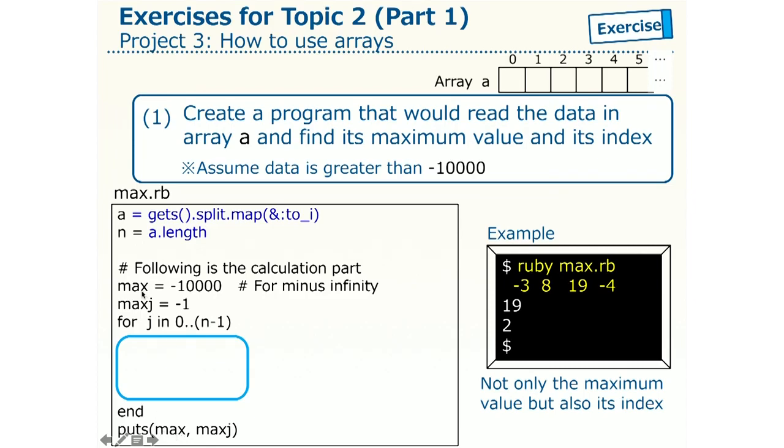The value max, this one, variable max, is used, kept this maximum value. Actually, we use this variable to keep the current maximum value when going through the array A. So, we assign minus 10,000 for its initial value here. The variable maxj is for keeping the index of the current maximum value. Here, we assign minus 1 to this as its initial value, which means that the index is undefined.